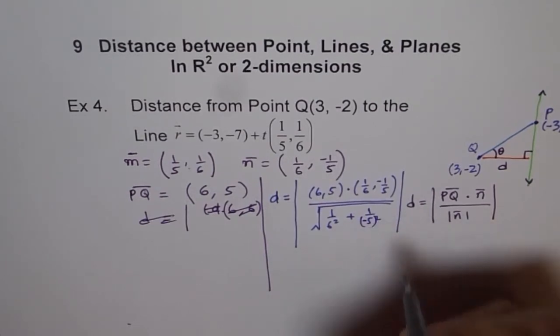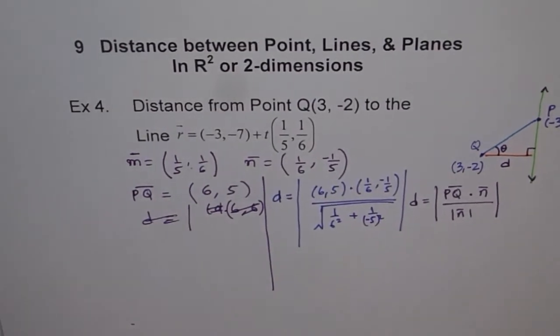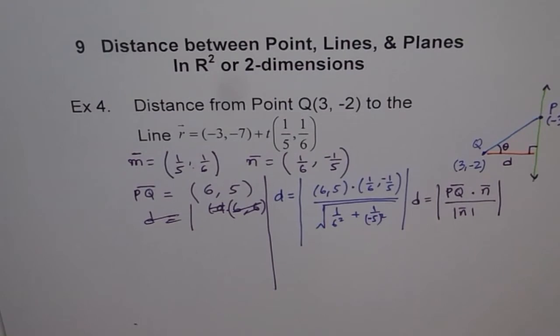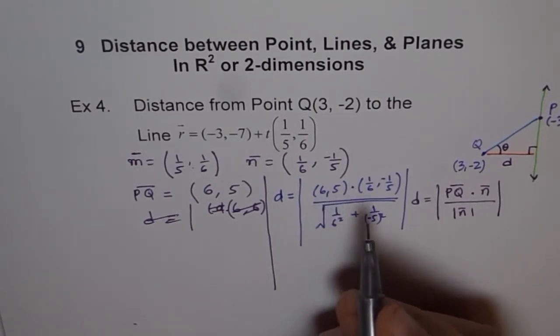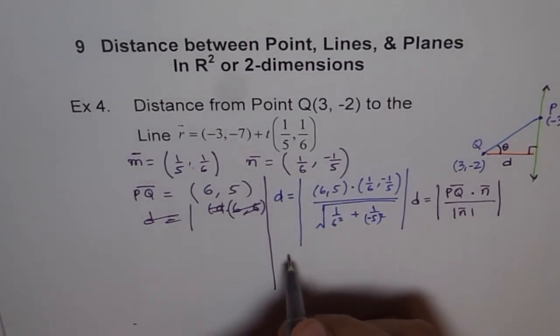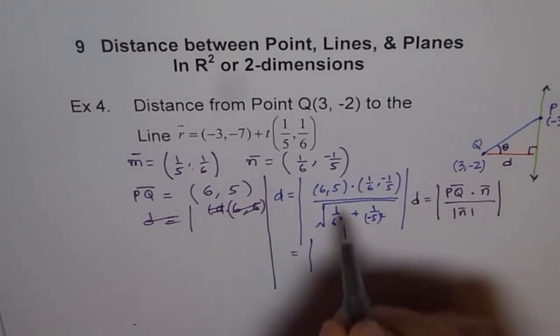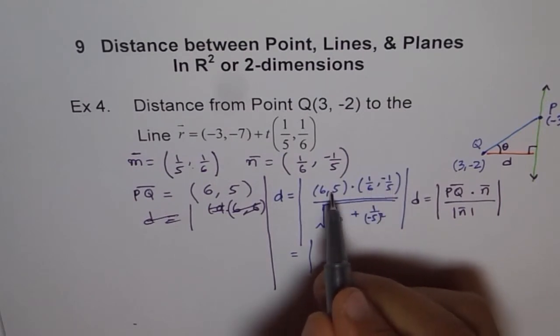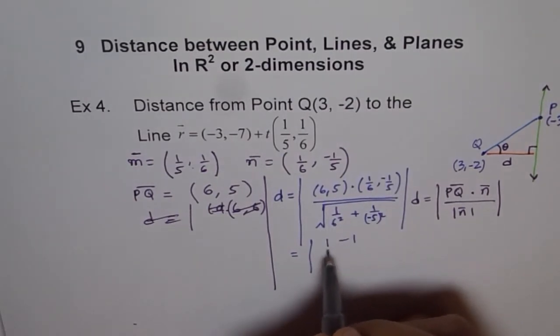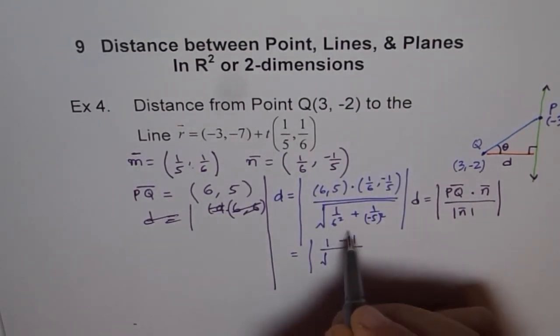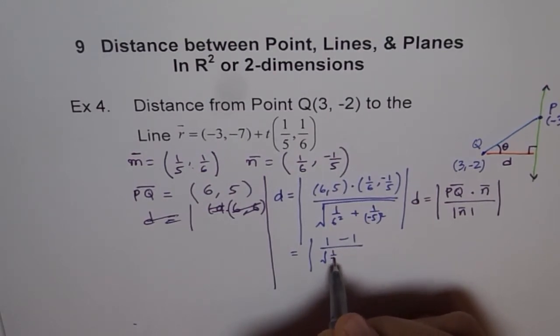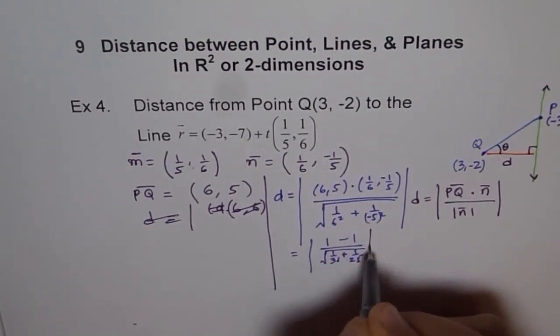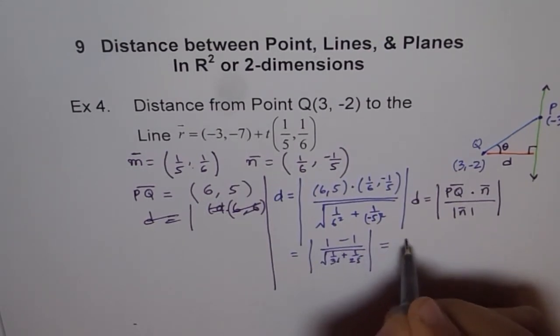From here we know this equals the absolute value of: 6 times 1/6 is 1, and 5 times -1/5 is -1, divided by √(1/36 + 1/25). Well, 1 minus 1 is 0, so we get zero.